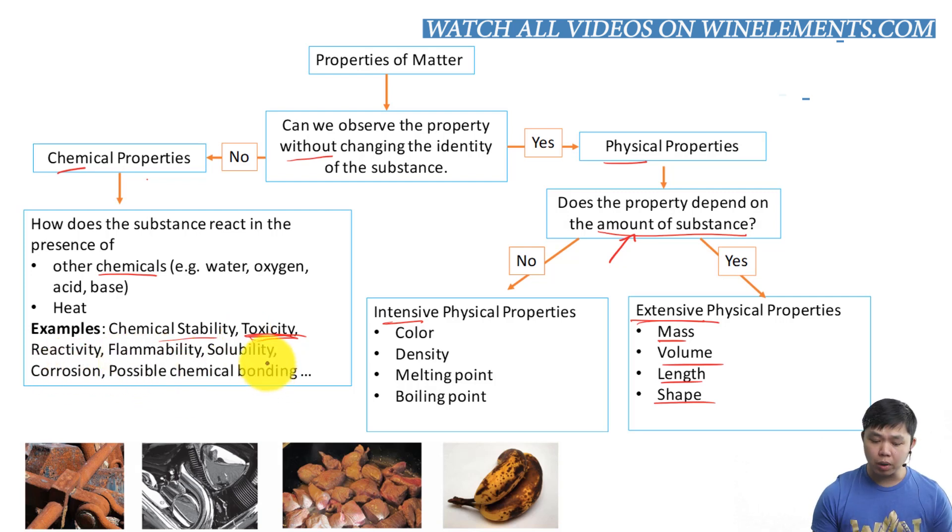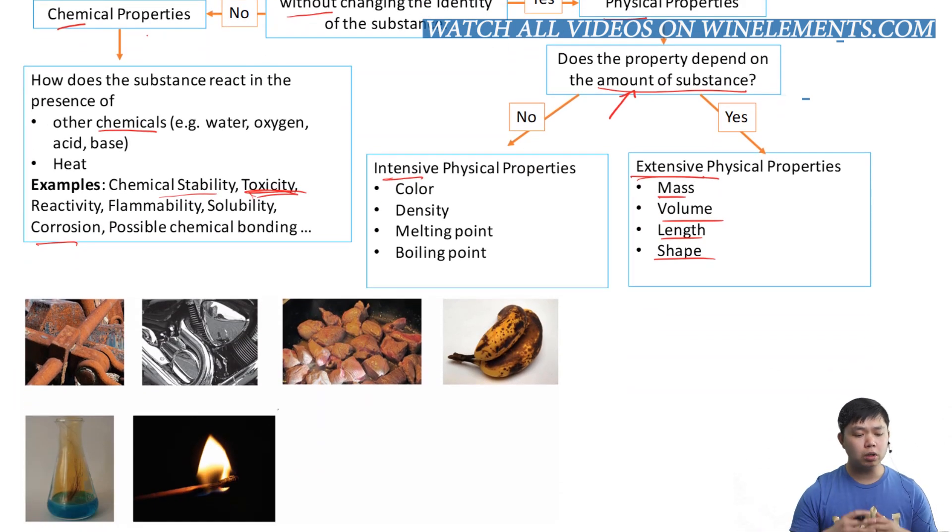So keep that in mind. And then we have reactivity, flammability, solubility, dissolving water, corrosion, and possible chemical bond. And that's the heart of chemistry. We are going to look at those chemical properties to determine how it's going to react and form all these beautiful substances that we see in our daily life.